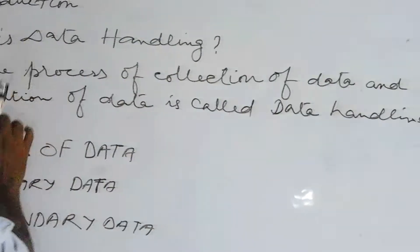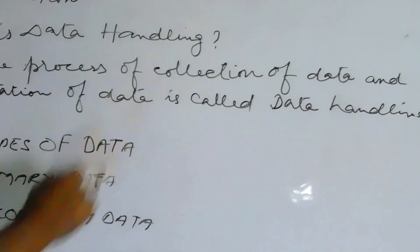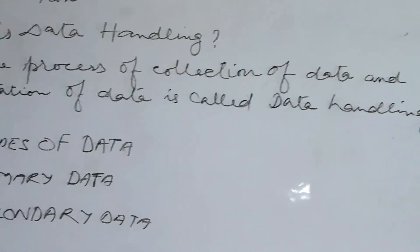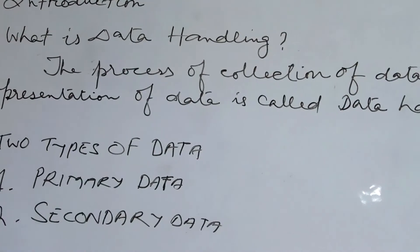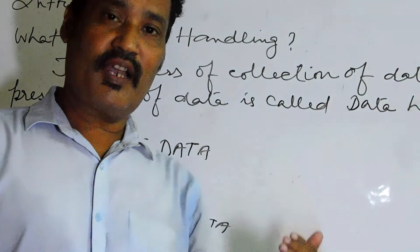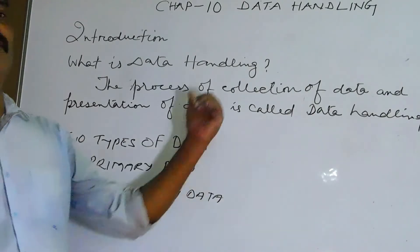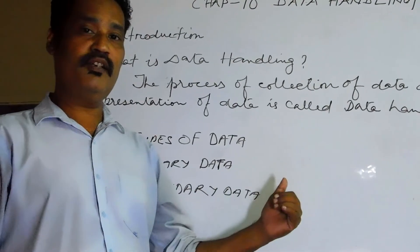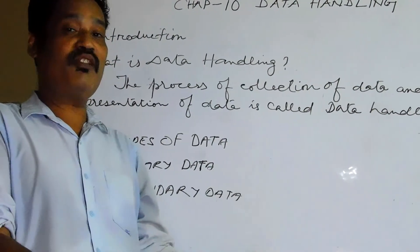So here two types of data, that is one is primary data. Now what is primary data? Primary data is the data collected by the investigator itself. Like for example your mother, I have given you the example of your mother, if your mother goes and collects the information by herself so that is primary data.